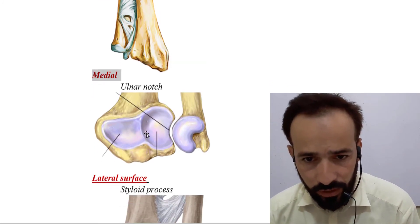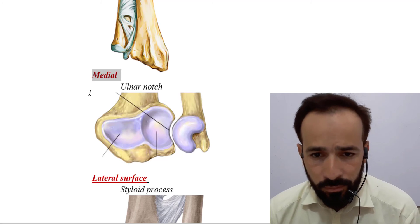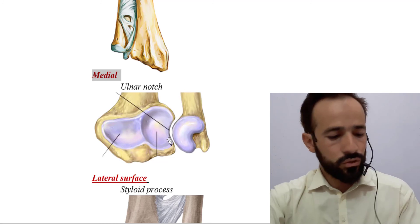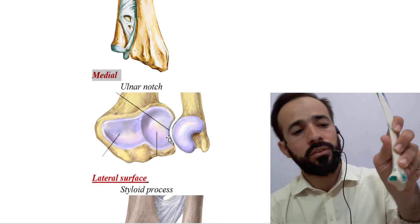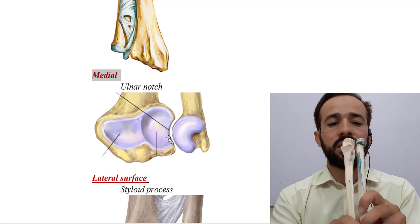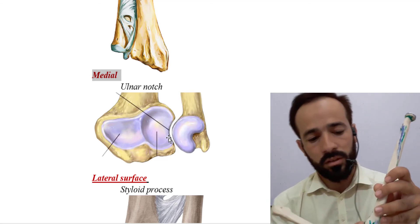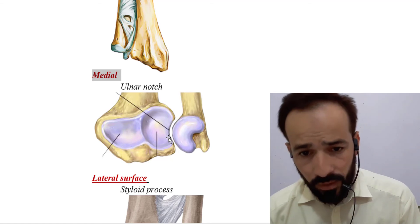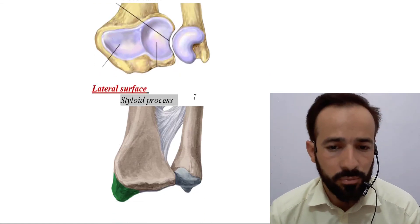The medial surface of the lower end has the ulnar notch, where the ulna articulates to form the distal radioulnar joint. The ulna bone is in the medial compartment of the forearm, so this notch faces medially.